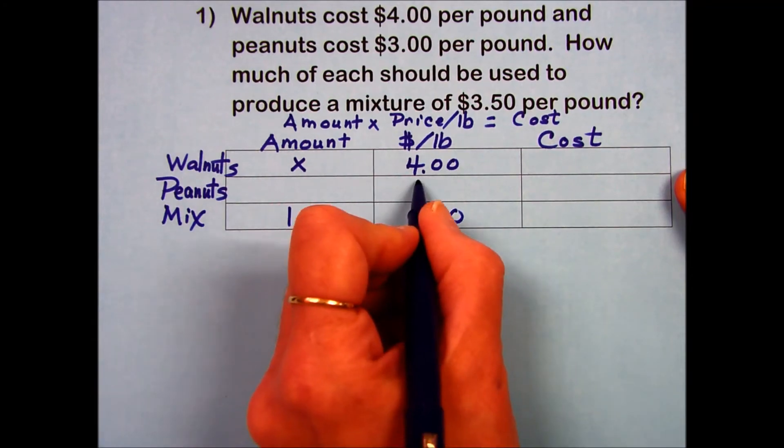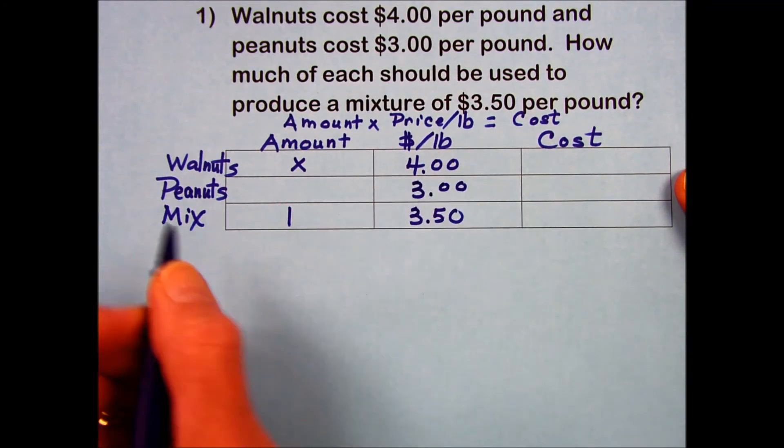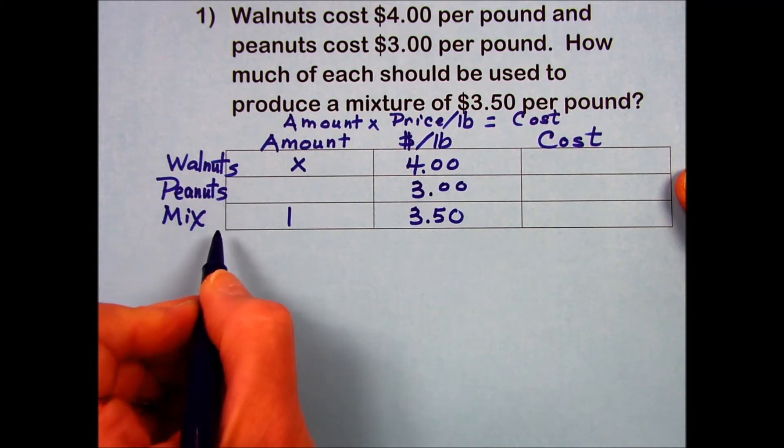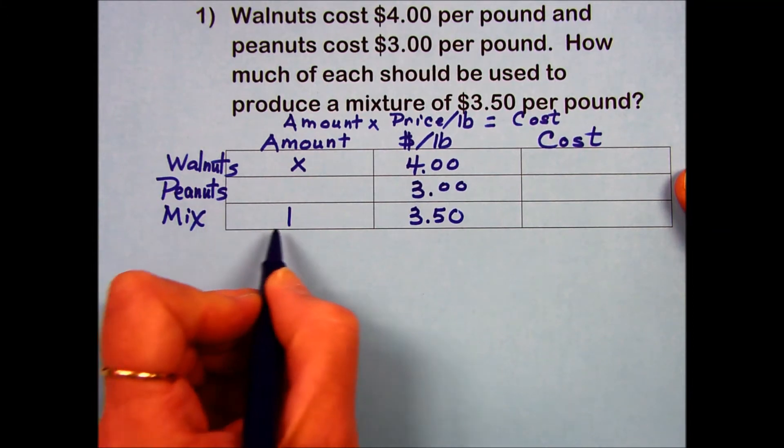Coming to the peanuts, they cost $3 per pound. To determine the amount of peanuts, I'm going to use the fact that we have the total mixture is one pound.